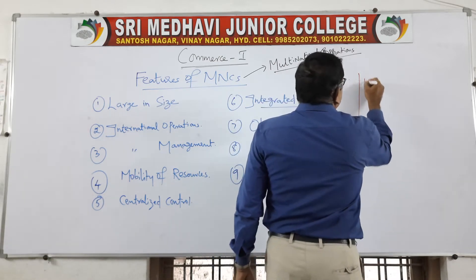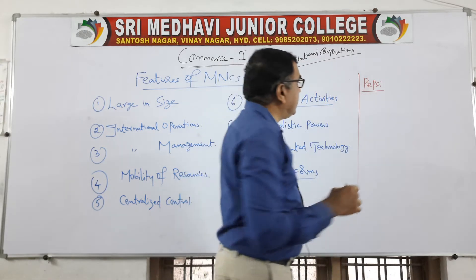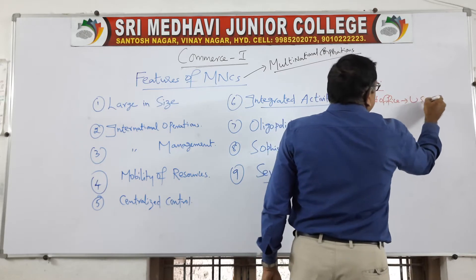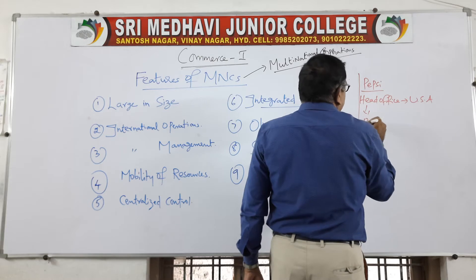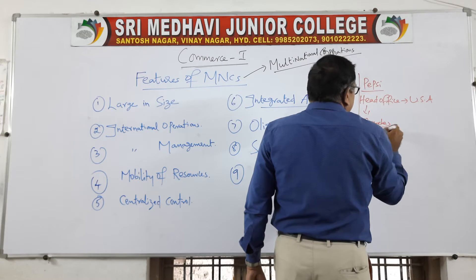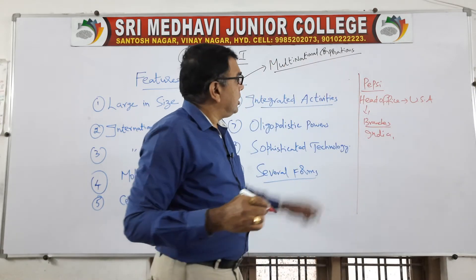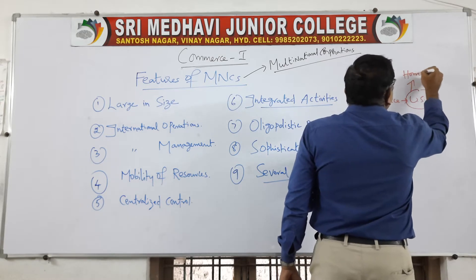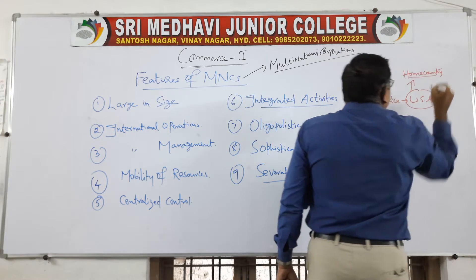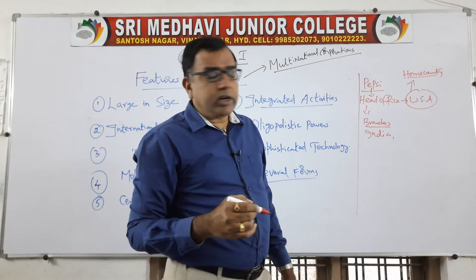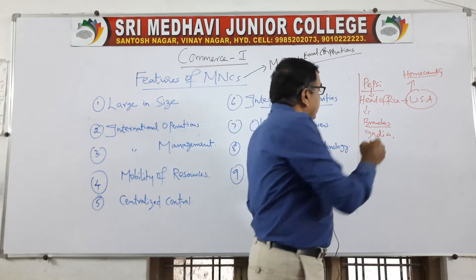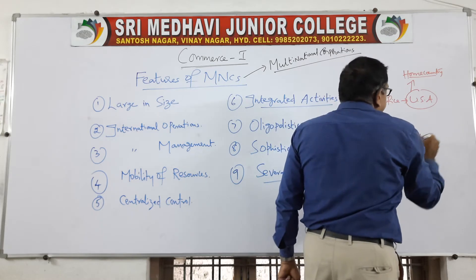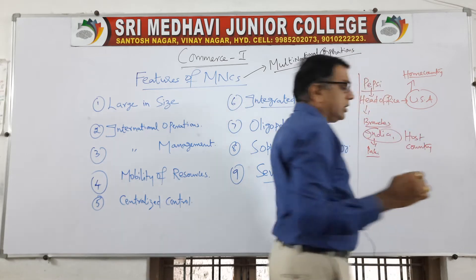Suppose Pepsi is a multinational company. Its head office is in America, USA, but its branches are there all over the world — in India and various other countries. So Pepsi's head office is in USA, so we say USA is the home country — the country in which the head office is located and from where it operates. And it has branches in India, Pakistan, China, and various other countries, so those become the host country. India is the host country.